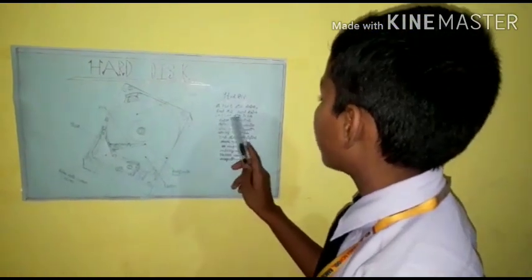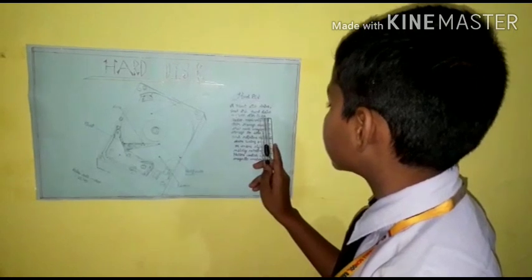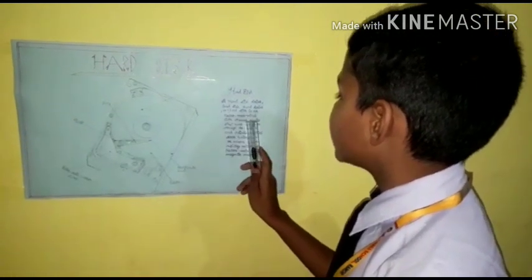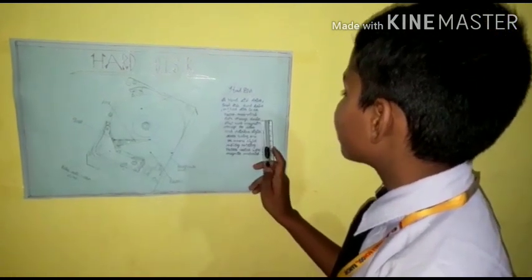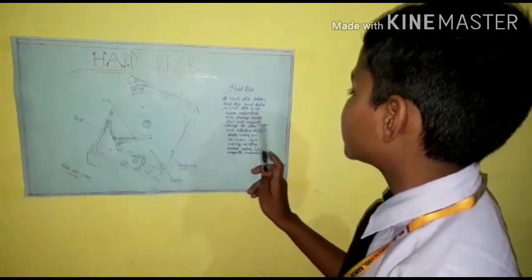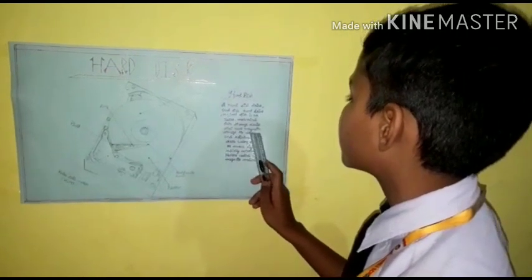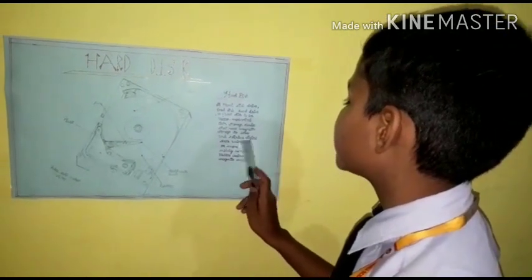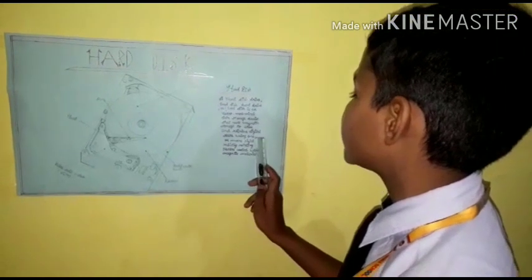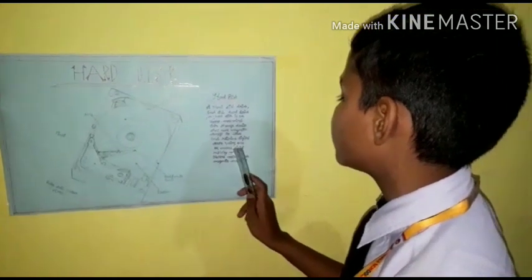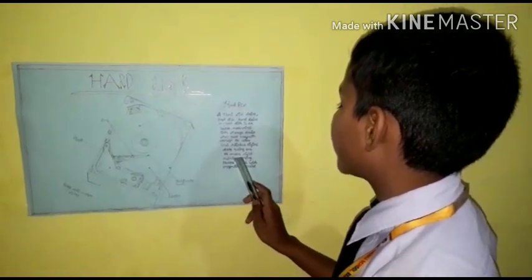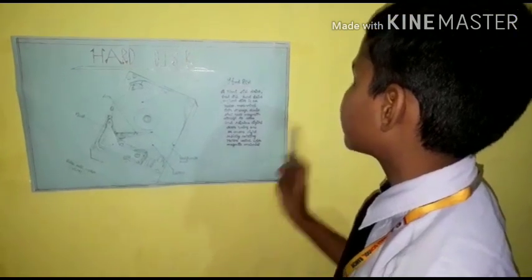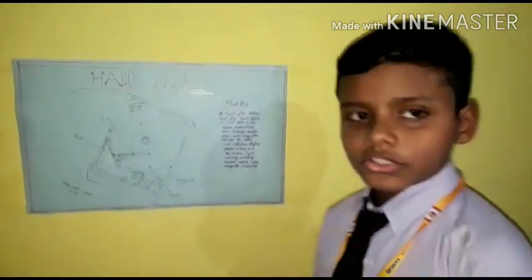A hard drive or fixed disk is an electromagnetic data storage device that uses magnetic storage to store and retrieve digital data using one or more rapidly rotating platters coated with magnetic materials.